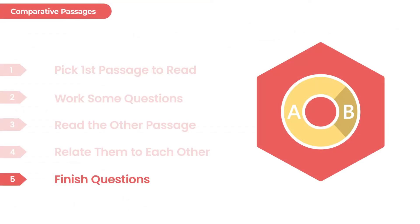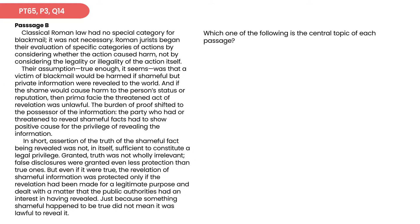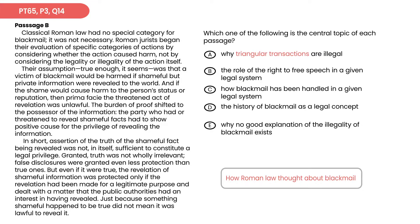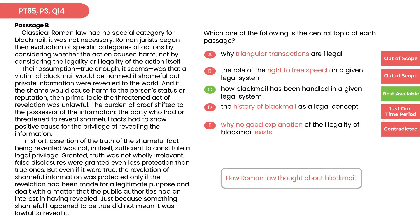Now that we're done with passage B, we're ready to finish the questions. If we return to question 14 and answer it just from passage B, we'd say the central topic was how Roman law thought about blackmail. Going through the answers: triangular transactions sounds like alien language; we never talked about the right to free speech — we talked about the opposite; there's no history of blackmail across time, just one moment; and E says there's no good explanation, but the very first sentence says they didn't even need a special category — it wasn't necessary. So interestingly, either passage on its own is enough to get the correct answer on question 14.